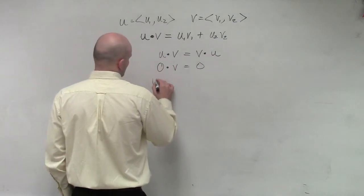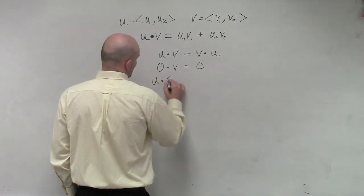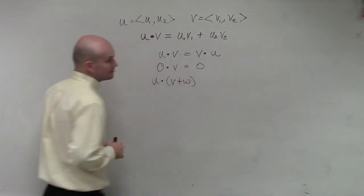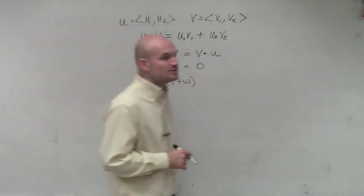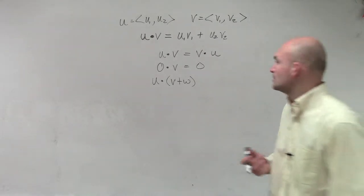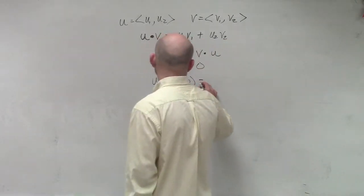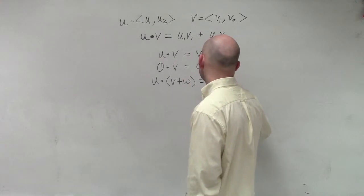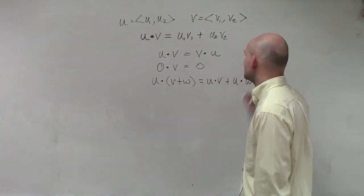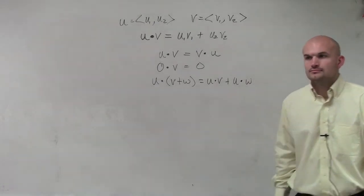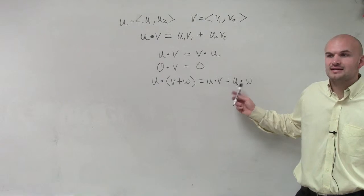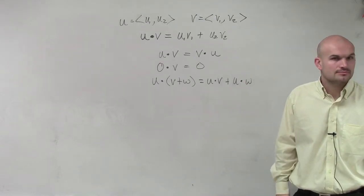If we have u dot product v plus w, then what we're going to be able to do is apply the distributive property to this. So that's going to equal u dot v plus u dot w. We're going to apply the dot product once, and then apply the dot product a second time, and then add those two up.